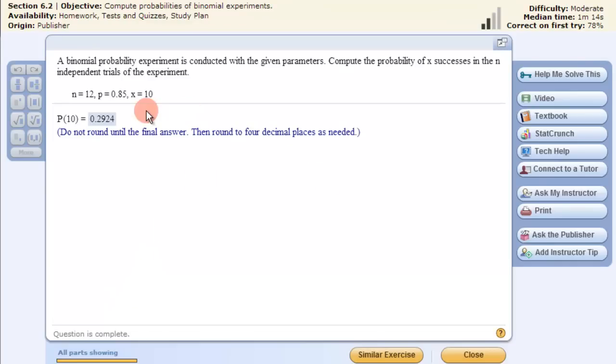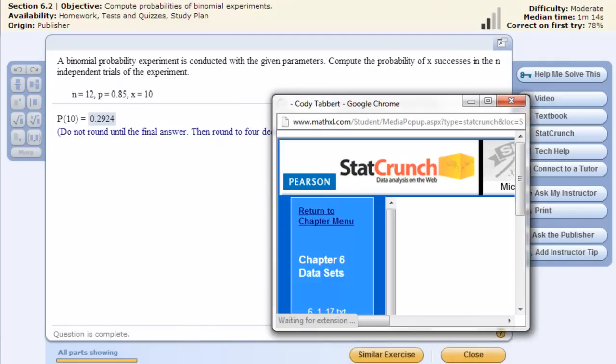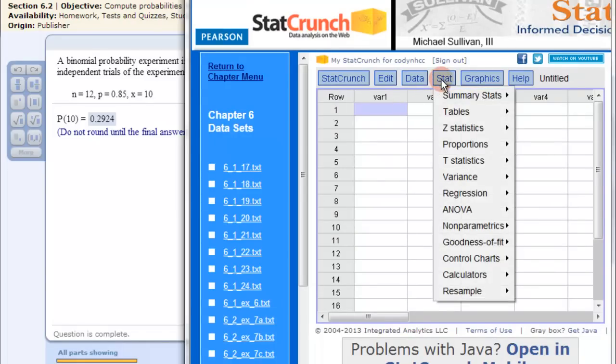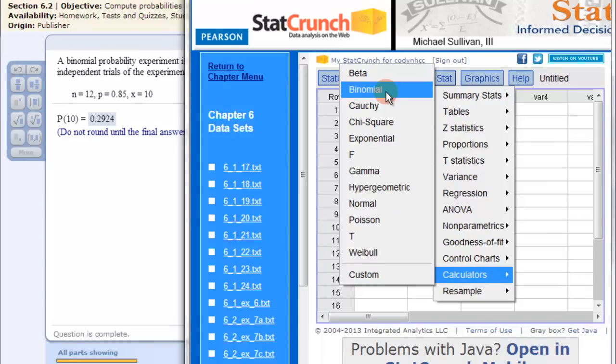Alright, but let's do this here. So it's quite quick actually. You go into StatCrunch and when it opens you click Stat and go down to Calculators and then Binomial.